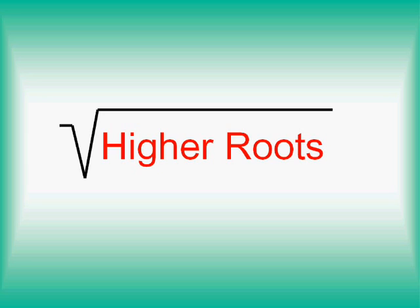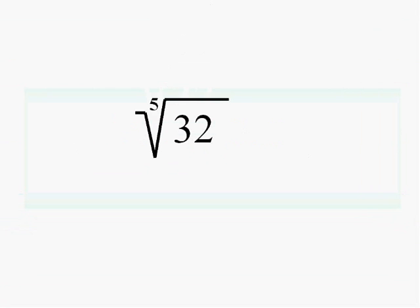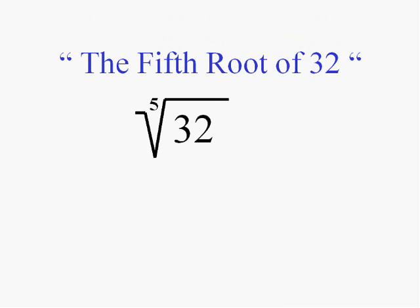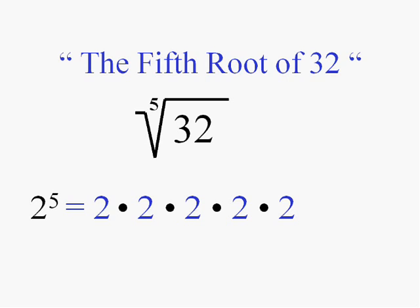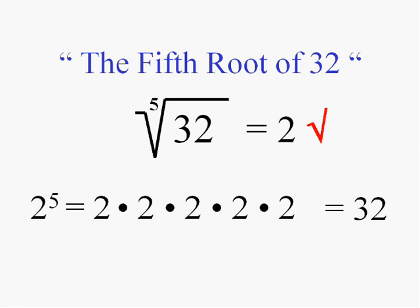Let's try working with higher roots. The fifth root of 32 is going to be the number that you raise to the fifth power to get 32. What number would I raise to the fifth power to get 32? 2 to the fifth — 2 times 2 times 2 times 2 times 2: that's 4, times 2 is 8, times 2 is 16, times 2 is 32. So the fifth root of 32 is in fact 2.